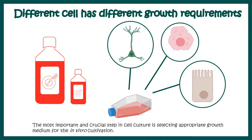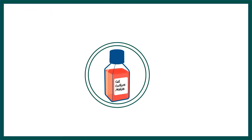Different cells have different growth requirements because not all cells are dividing at all times, and each cell has a different metabolism. For example, a kidney cell, neuron, or hepatocyte all have very different growth requirements. But at a simplistic level, all of them need certain things in common.